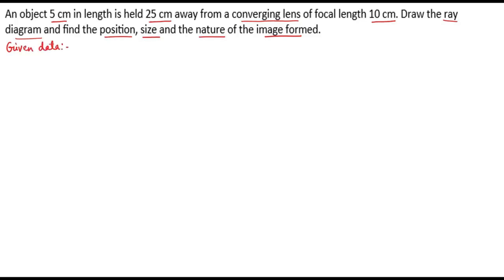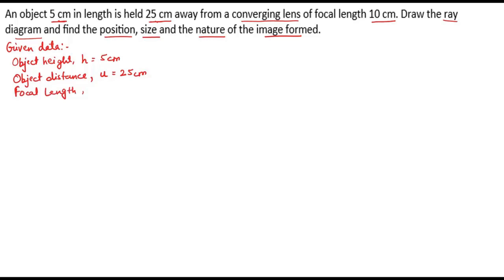In the question, 5 cm is given as object height. So let's write: object height h = 5 cm. Next, 25 cm is given as object distance. Object distance is represented by u, so u = 25 cm. Next, focal length is given as 10 cm, so f = 10 cm. Here, object distance is taken as negative because the object is placed on the left side of the lens, so we take object distance as negative.